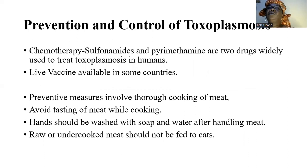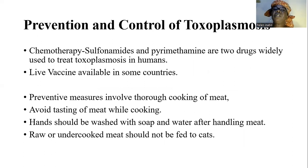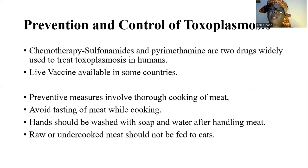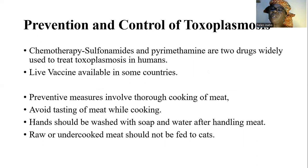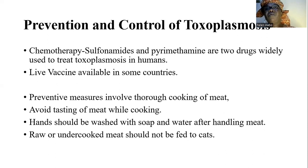How do we prevent and control toxoplasmosis? We have the use of chemotherapy — sulfonamides and pyrimethamine are two important drugs used to treat toxoplasmosis in humans. Live vaccines are available in some countries. But most importantly, preventive measures are better, which will involve the thorough cooking of meat.